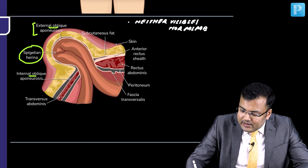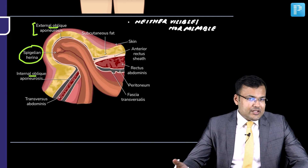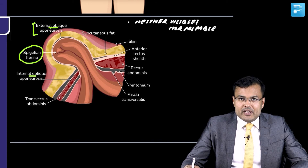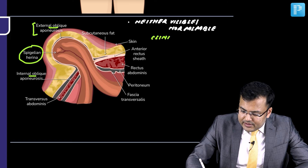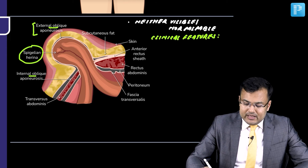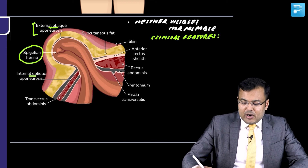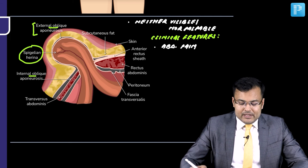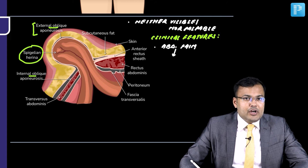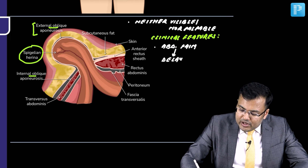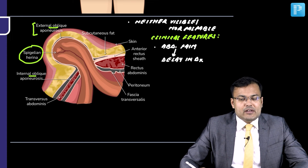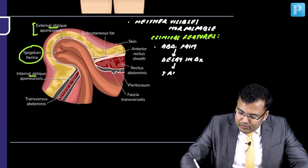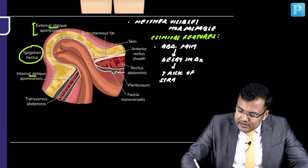Because this hernia is neither visible nor palpable, there is delayed or late presentation — the patient is not aware they are suffering from hernia. When the patient becomes symptomatic, they present with abdominal pain. But because the hernia is neither visible nor palpable, there is delay in diagnosis. Because of this delay in diagnosis, there is an increased risk of strangulation in spigelian hernia.